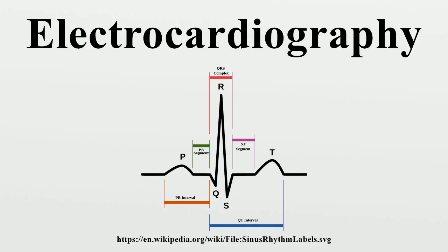Each of these leads represents the electrical potential difference between two points. For each lead, the positive pole is one of the 10 electrodes. In bipolar leads, the negative pole is a different one of the electrodes, while in unipolar leads, the negative pole is a composite pole known as Wilson's Central Terminal. Wilson's Central Terminal is produced by averaging the measurements from the electrodes RA, LA, and LL to give an average potential across the body. In a 12-lead ECG, all leads except the limb leads are unipolar.